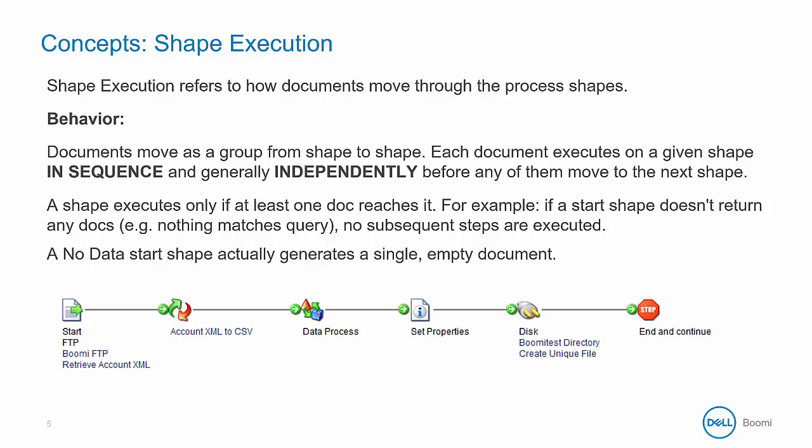Shape execution refers to how the documents move through each shape in the process. By default, documents do not flow through a process one by one — instead they flow through as a group. Each document is processed by the shape in sequence and generally independently from the others. Allowing each shape to process the entire group of documents allows for much greater processing speeds, because the shape logic is loaded into memory once for the entire group instead of initializing a connection or map shape for every document.